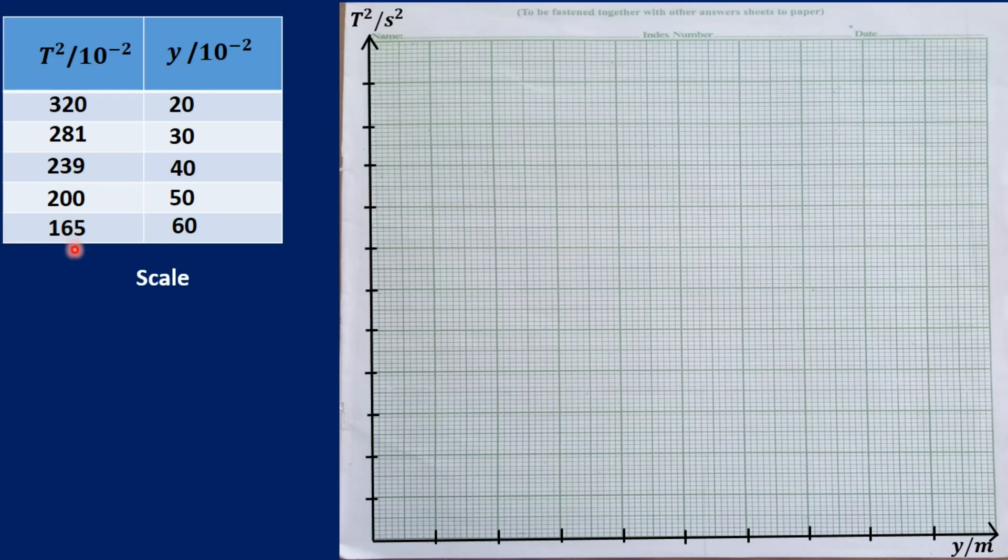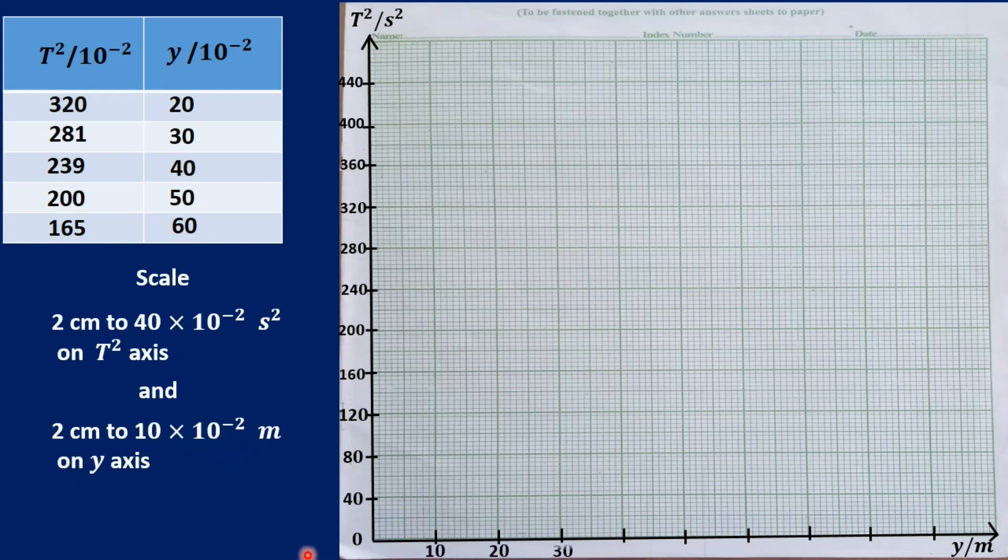Then we choose a scale. Looking at the T squared values, we can choose a scale of 2 centimeters to 40 times 10 exponent negative 2 second square on the T squared axis. So we have 0, 40, 80, 120, 160, 200, and so on. And looking at the Y values, we can choose a scale of 2 centimeters to 10 times 10 exponent negative 2 meters on the Y axis. So we have 10, 20, and so on.